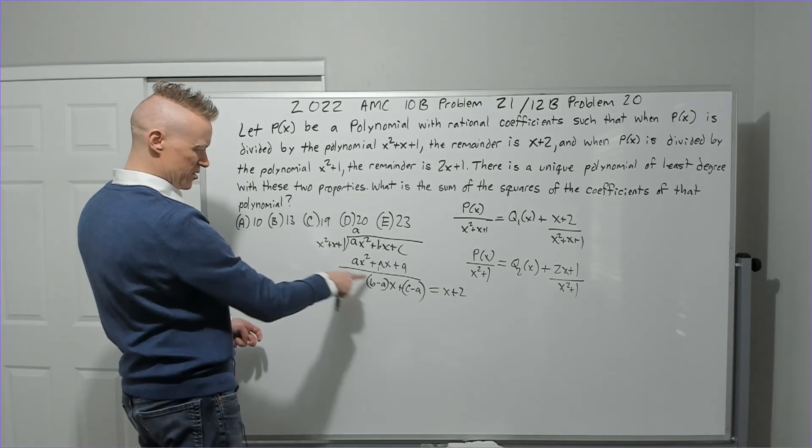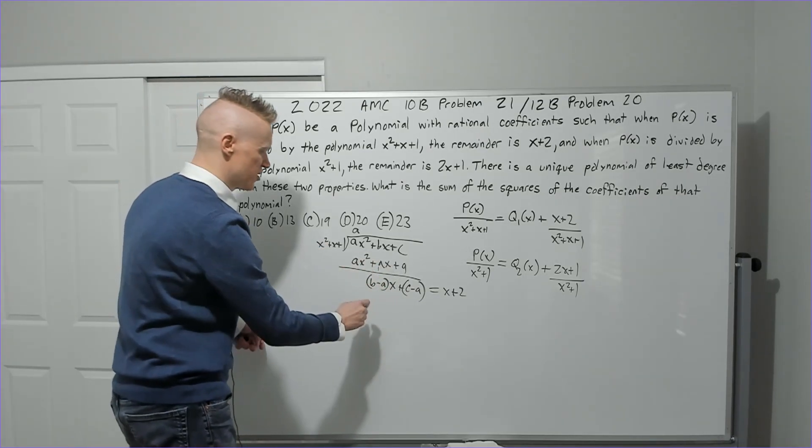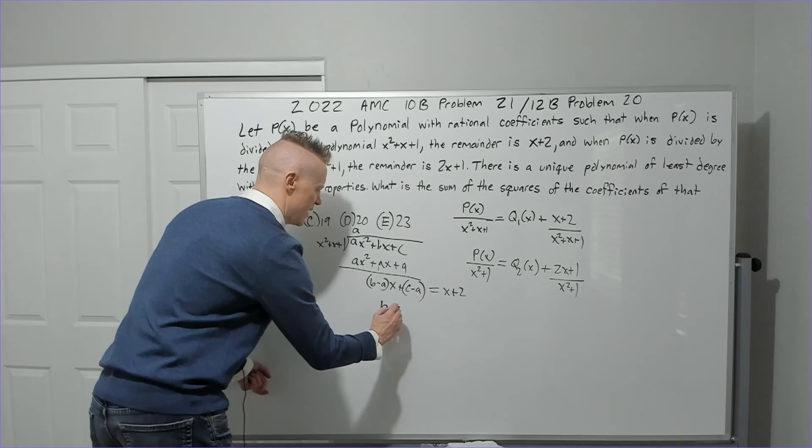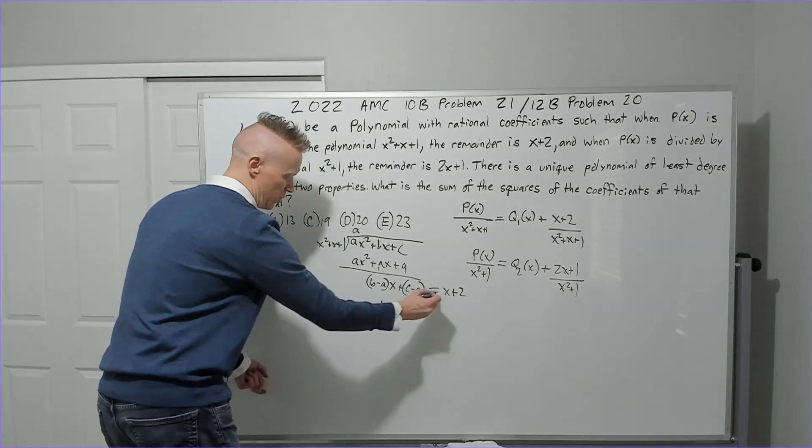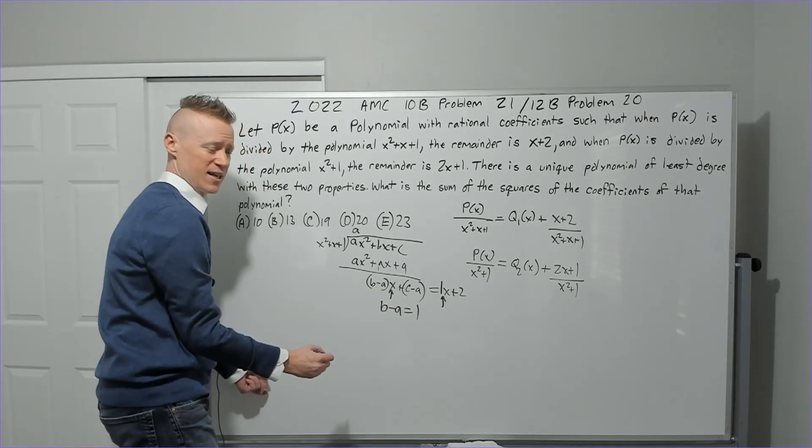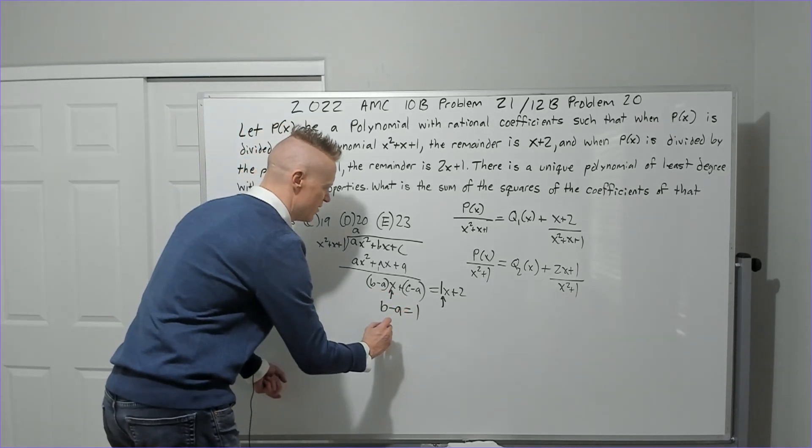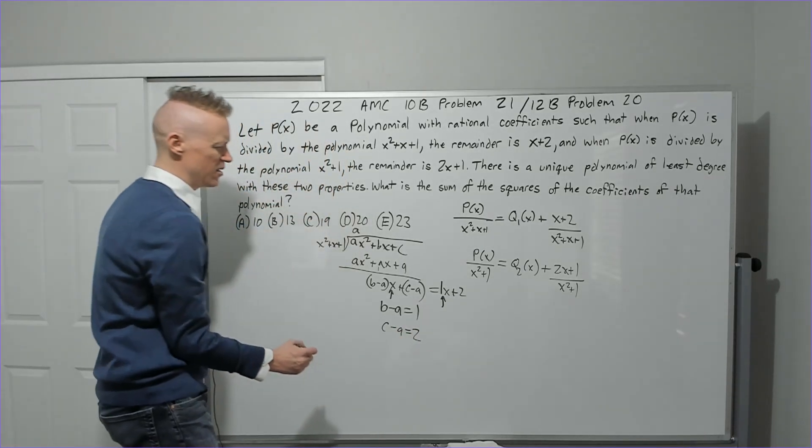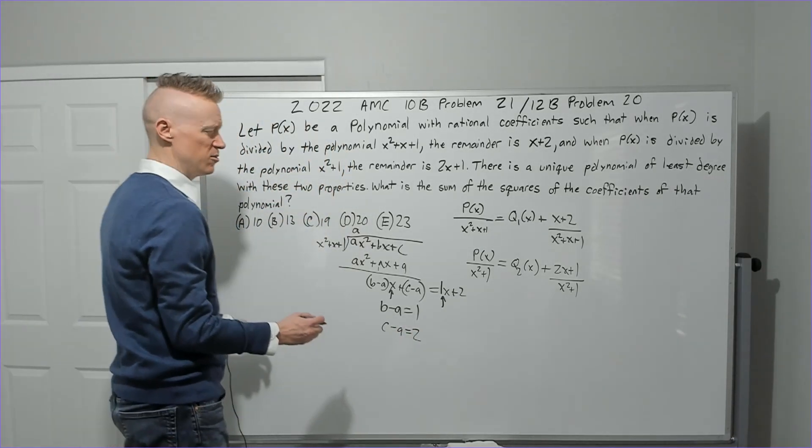This is the remainder here. This is remainder because we can't put squared into a linear term. So that means b minus a must equal one, the coefficient of x, because it's the coefficient of x on this side. And on the other side, c minus a must equal two. Okay, not much we can do with that.